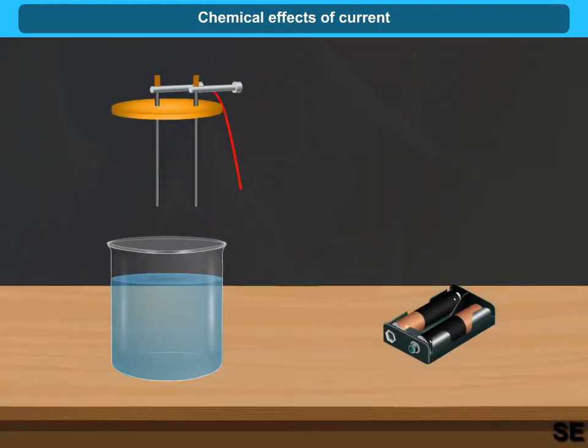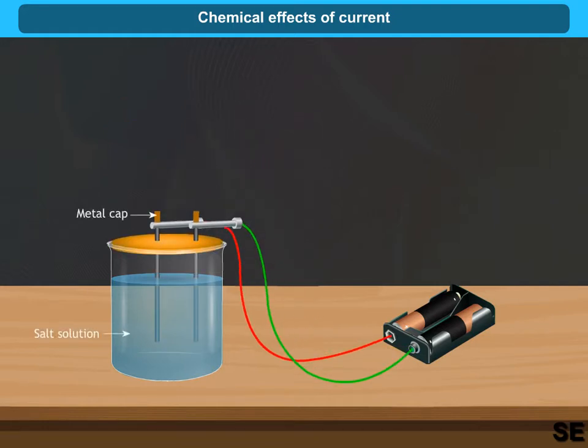Join the copper wire to the positive end and the other with the negative end of the battery. Dip these rods into a salt solution with metal caps above the water surface.